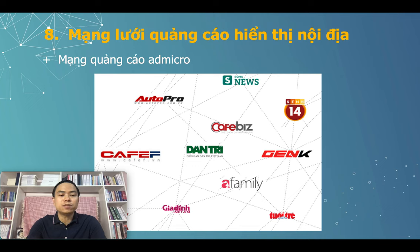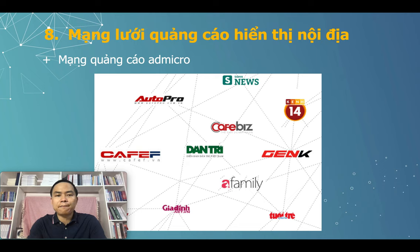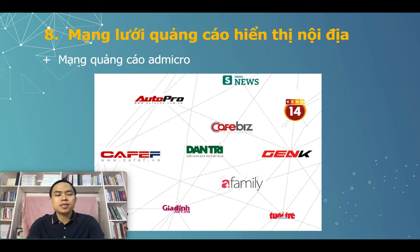Nếu như các anh chị không sử dụng các nền tảng như Facebook, Google, YouTube, Zalo, thì chúng ta cũng có thể sử dụng các mạng lưới quảng cáo hiển thị nội địa - tức là những mạng lưới quảng cáo của Việt Nam, của các trang báo điện tử Việt Nam. Ví dụ như mạng quảng cáo AdMicro của tập đoàn VCCORP, sở hữu rất nhiều trang báo và trang tin điện tử, ví dụ như Kênh 14, Cà phê F, rồi Genz v.v. Trước đây báo Dân trí cũng thuộc hệ thống này nhưng hiện nay Dân trí đã tách ra, các bạn có thể mua quảng cáo trực tiếp trên trang Dân trí.